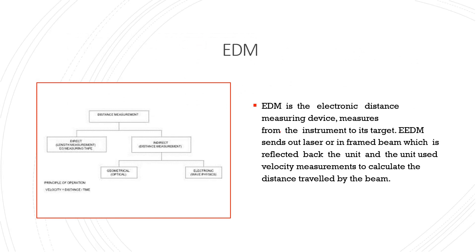EDM — the electronic distance measuring device — uses an instrument to measure the target. The EDM sends out a laser or infrared beam which is reflected back to the unit. The unit uses velocity measurements to calculate the distance traveled by the beam.